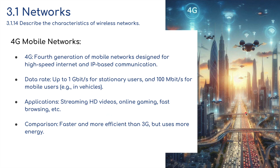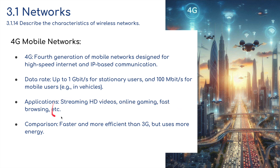4G, the fourth generation of mobile networks, is designed for high-speed internet and IP-based communication. It delivers data rates up to 1 gigabit per second for stationary users and 100 megabits per second for mobile users, such as those in vehicles. Applications include streaming high-definition video, online gaming, and fast browsing. It's faster and more efficient than 3G, but uses more energy.